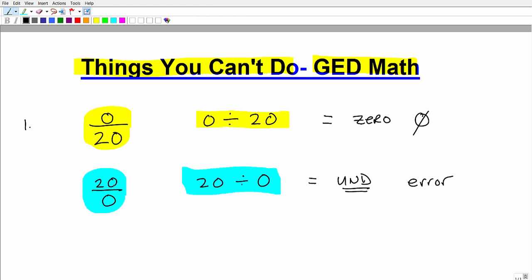you have what we call an undefined situation. You can actually go into your calculator and plug this in. You'll see you'll get some sort of error message. Now, just think about that logically. Let's say you have your 20 friends here, and you guys just want to split up maybe in groups of zero. How do you do that? It doesn't even make sense.